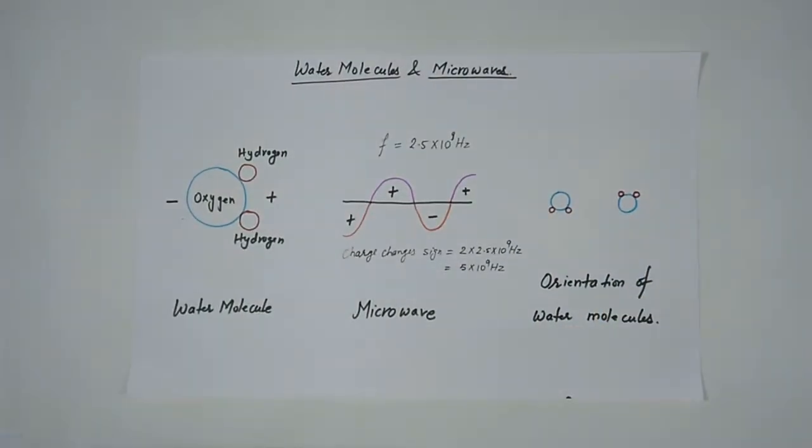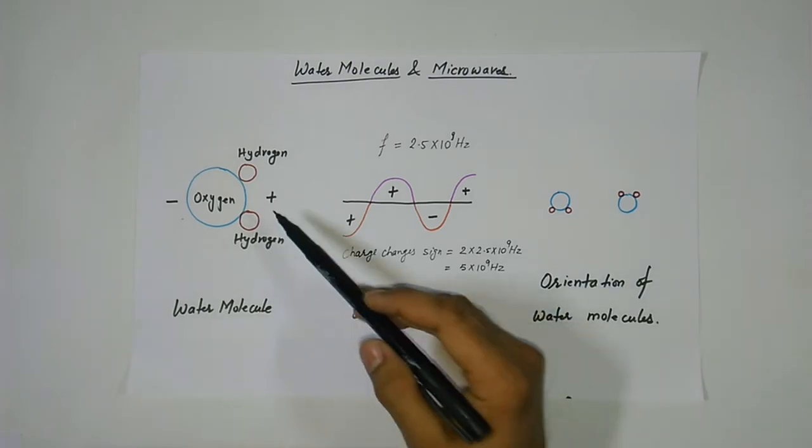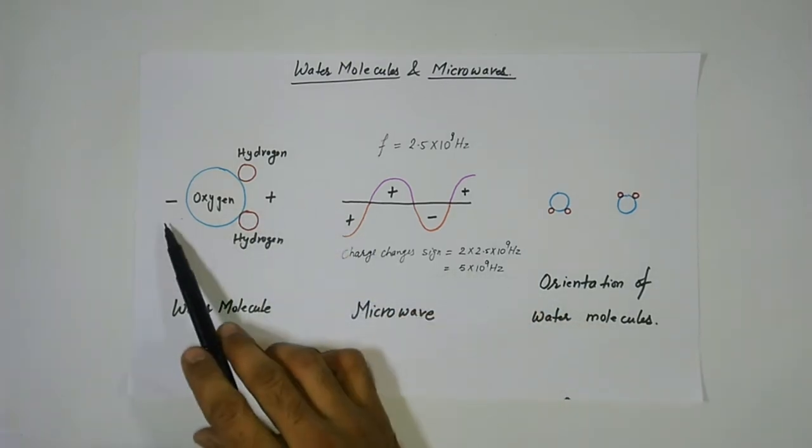Most foods we consume contain over 70% water by weight. Water molecules are polar, that is the electric charge on molecules are not symmetric. The alignment and charges on the atoms are such that hydrogen side of the molecule has a positive charge and oxygen side has a negative charge.